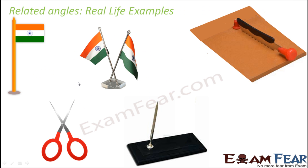Now that we have learned about adjacent angles, linear pair, vertically opposite angles, complementary angles, and supplementary angles, let us see if we can spot these angles in things around us. Think of a scissor — you can see two lines intersecting each other and experience vertically opposite angles. At the same time, you can also experience linear pair. Similarly, with decorative crossed flags placed in cars, offices, or homes, you also get to see vertically opposite angles.